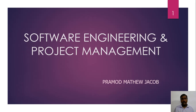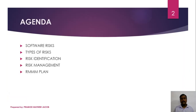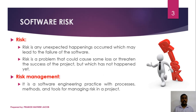Hi all, today we are going to learn about risk management in software. First we will learn about software risk and its types, then how to identify the risk associated with a software project. After that we will learn about risk management strategies and the RMMM plan - Risk Mitigation Monitoring and Management plan - which is used for identifying and resolving the risk associated with the software product.